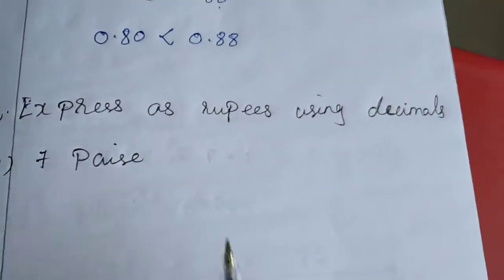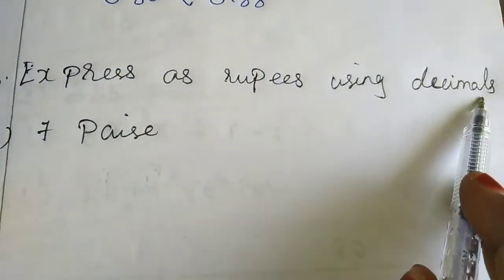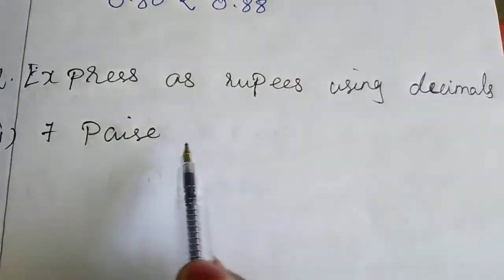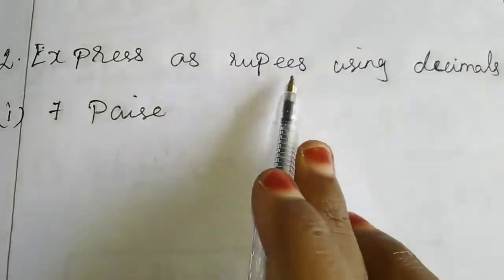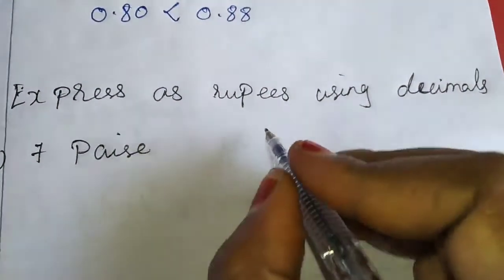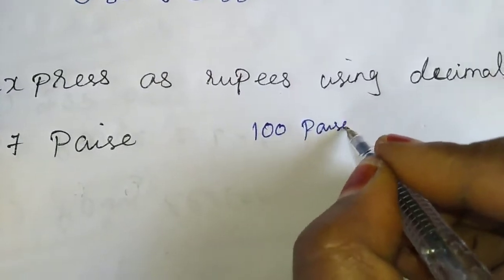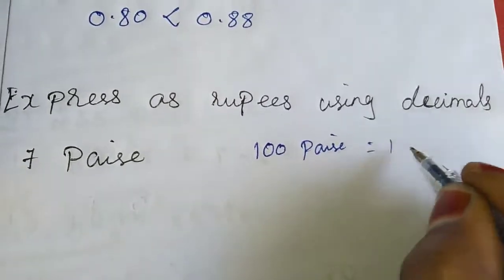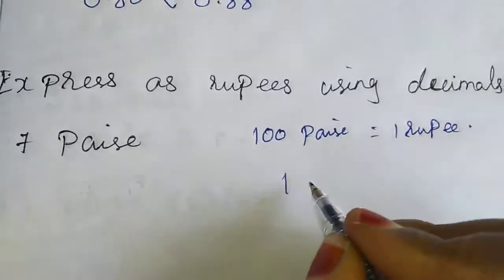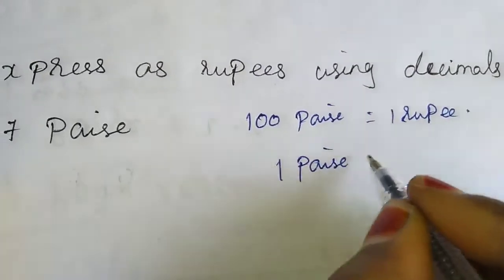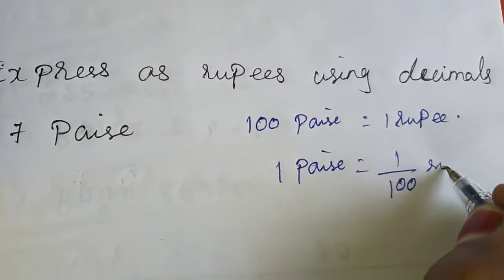Now I am moving to the second sum. The second sum is: express as rupees using decimals. They are giving values in paise and we want to write rupees in decimal. We know 100 paise equals 1 rupee. So, 1 paise equals 1/100 rupees.